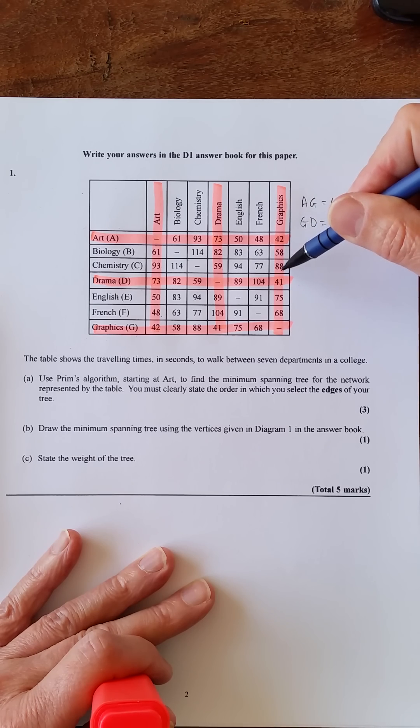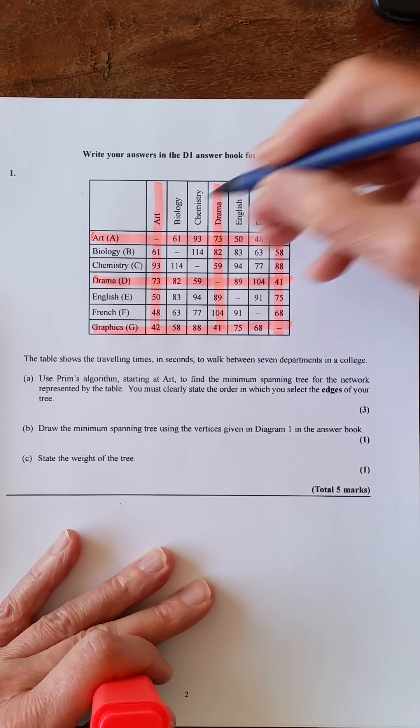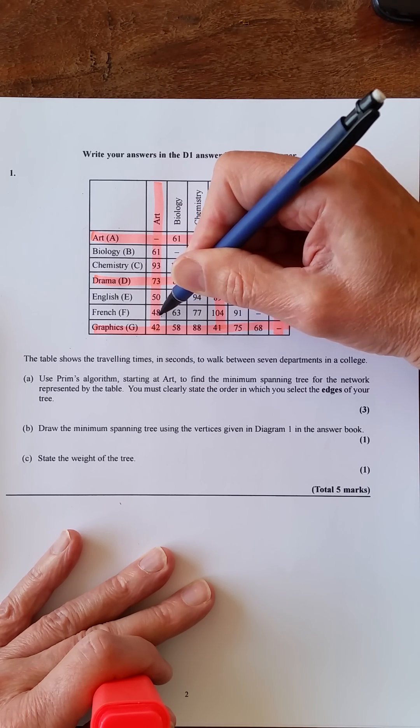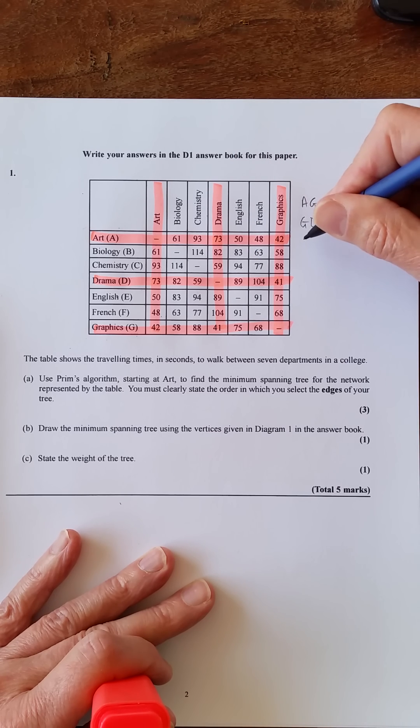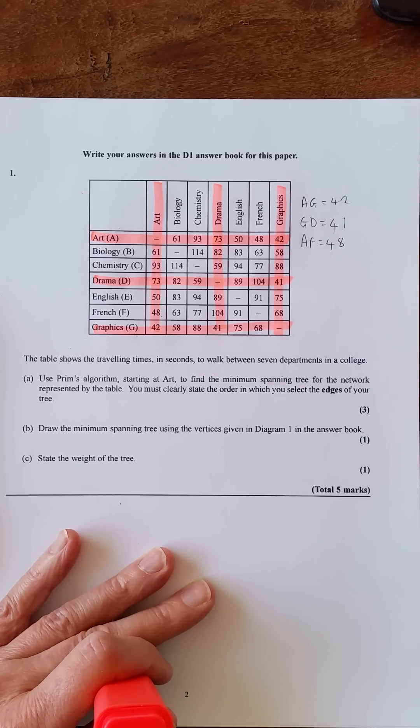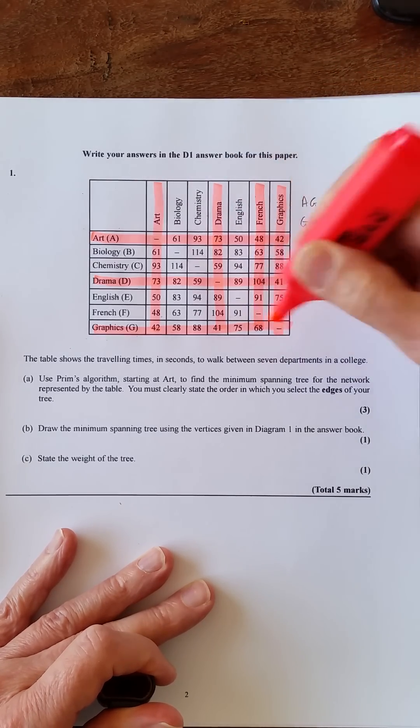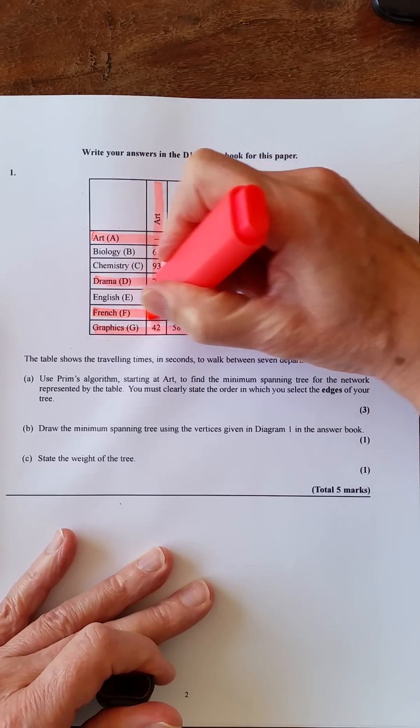So the shortest one of these: 61, 93, 50, 48, 82, 59, 89, 104, 58, 88, 75, 68. So you can say that this one is the shortest here F, so I've got AF, AF equals 48.